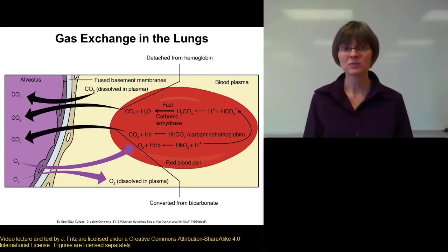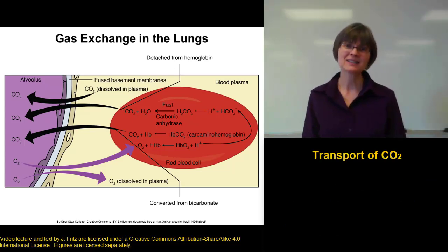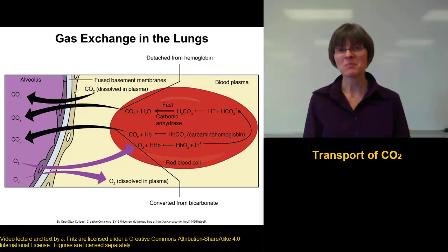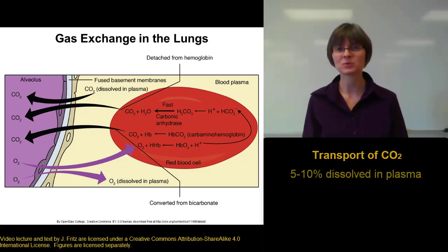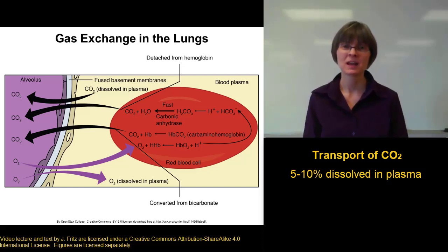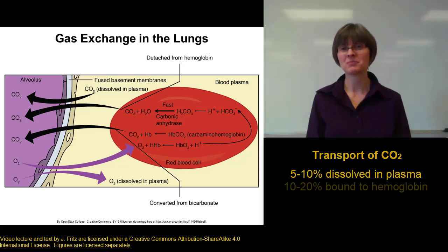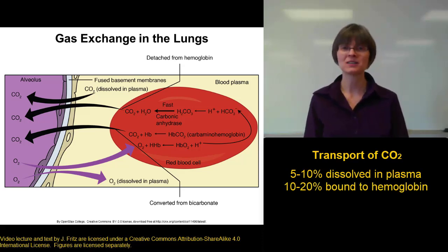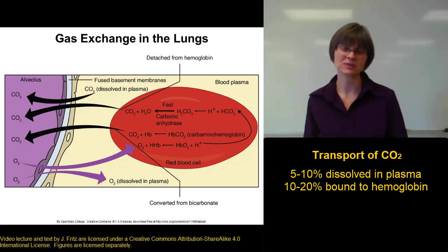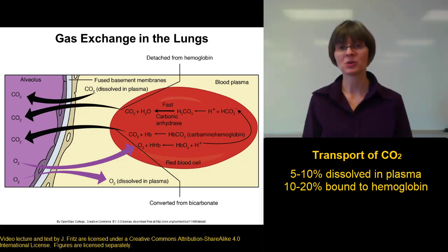Next, let's take a look at the transport of carbon dioxide in the blood. Carbon dioxide is a little bit more polar than oxygen, so it dissolves a little bit better in your blood, but not much. About five to ten percent of your carbon dioxide is found just dissolved in the plasma. You can also find some carbon dioxide bound to hemoglobin — hemoglobin can bind to carbon dioxide or to oxygen, although it prefers oxygen. So around ten to twenty percent of your carbon dioxide is found bound to hemoglobin or to other proteins in the blood.